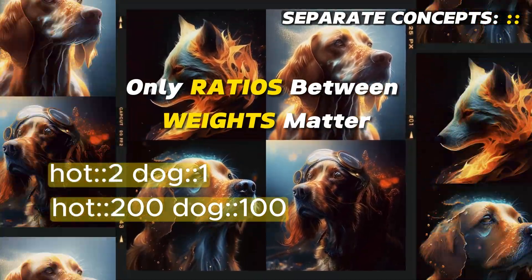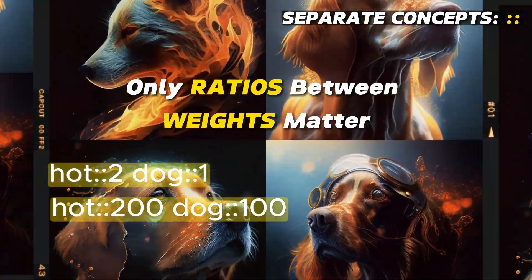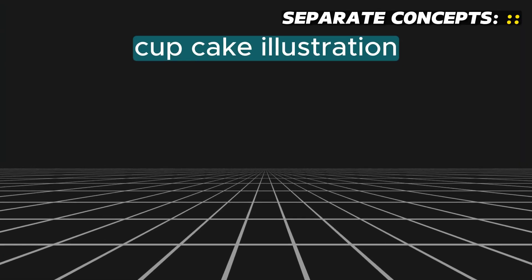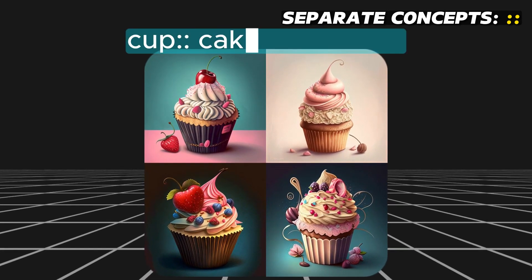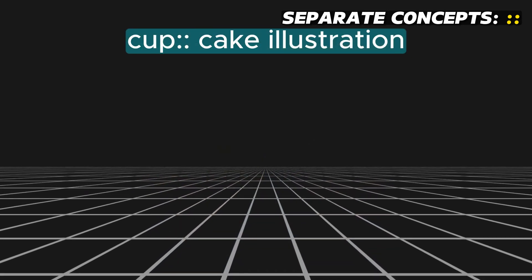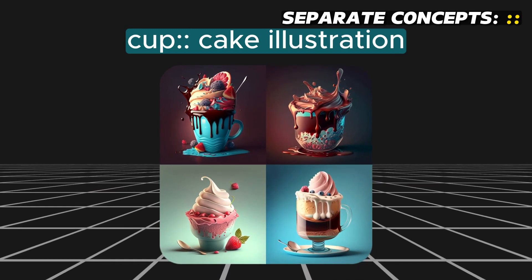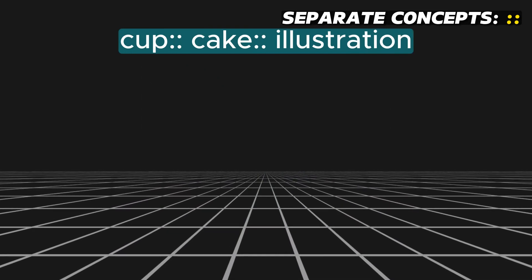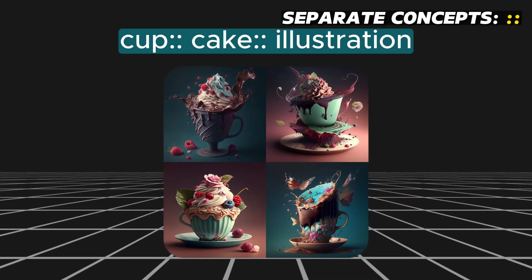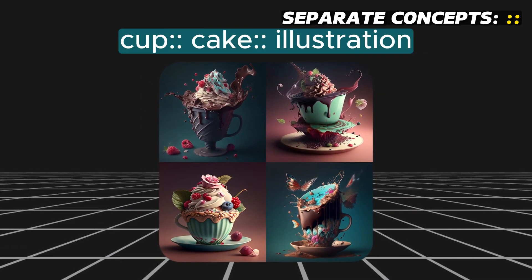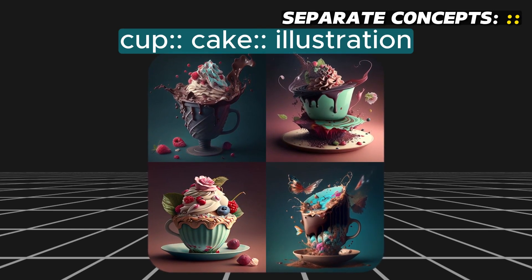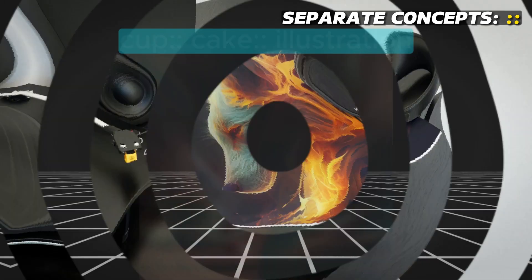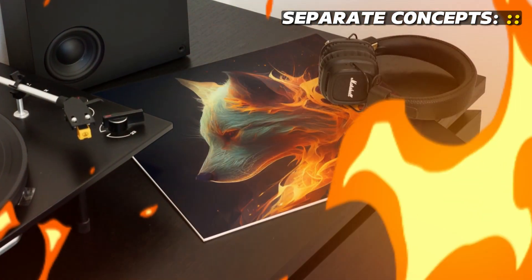You can extend multi-prompting to more than two concepts. For example, "cupcake illustration" generates pictures of cupcakes. If we separate "cup" with the double colon operator, Midjourney generates pictures of cakes and cups. And if we separate all three concepts — cup, cake, and illustration — Midjourney generates a cake in a cup, with flowers and butterflies typical of a random illustration. Give multi-prompting a try next time you're in Midjourney.